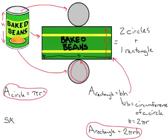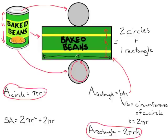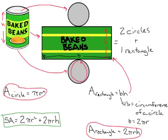So surface area — we can abbreviate surface area to SA — equals the area of the two circles: two times pi times the radius squared, plus the area of the rectangle: two times pi times the radius, which is the circumference of one of the circles, times the height. This is the formula for the surface area of a cylinder.